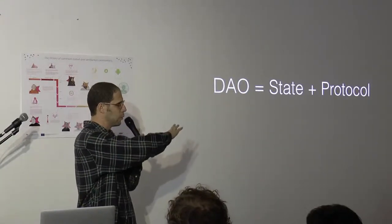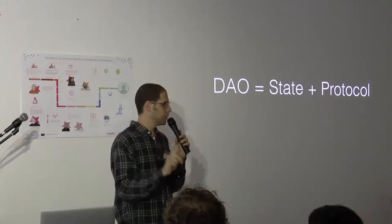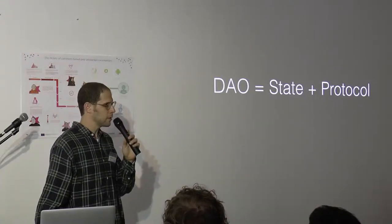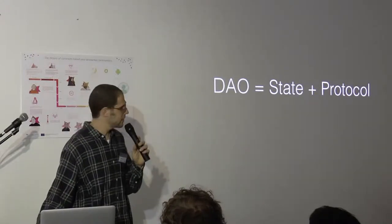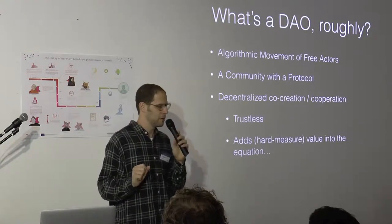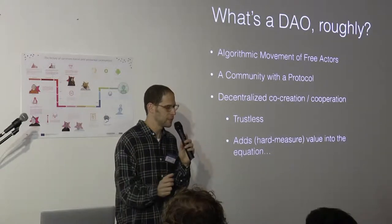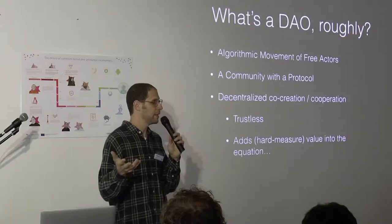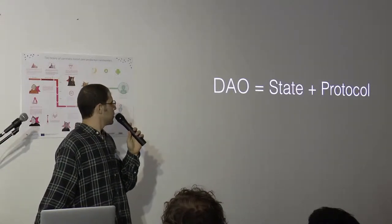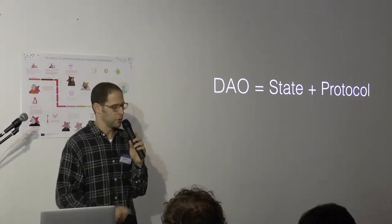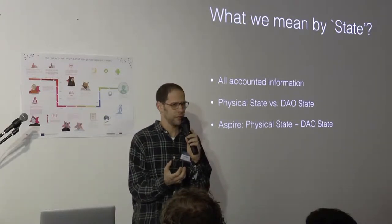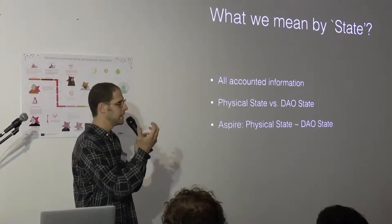I claim that basically if you want to well define what DAO is, you need to define two things: the state of the DAO and the protocol. DAO stands for Decentralized Autonomous Organization, which is roughly an algorithmic movement of actors. Maybe a million people playing together according to predefined rules, doing something together, like decentralized insurance. To well define DAO, we need to define the state and protocol. State is basically all the information that you account for.